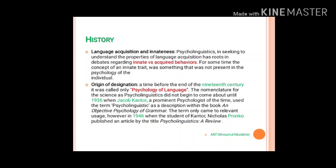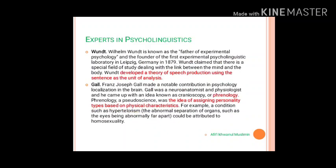The term psycholinguistics was not popular from the beginning; it was called the psychology of language in the 19th century. The nomenclature of psycholinguistics began with a book written by Jacob Kandor in 1936. Then his student Nicholas Pronko wrote an article titled 'Psycholinguistics: A Review' in 1946, and the term became popular starting from that time.